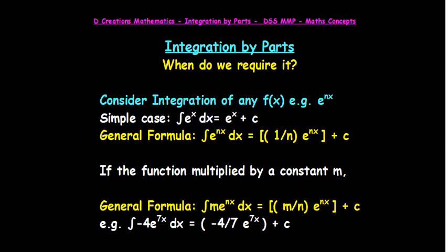What if this function is multiplied by constant m? Then we have this general formula: integral of m*e^(nx) dx equals (m/n)*e^(nx) + c. For example, if m is -4 and n is 7, you will get -4/7 e^(7x) + c.